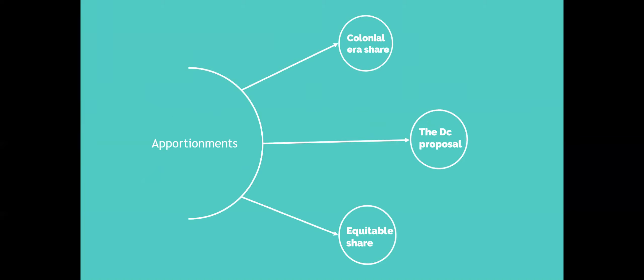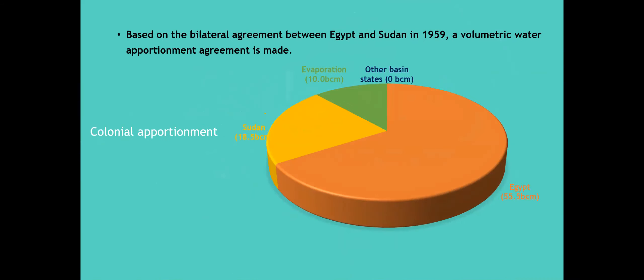The colonial apportionment is a bilateral agreement between Egypt and Sudan signed in 1959, assigning volumetric apportionment to the two downstream countries out of 84 billion cubic meters: Egypt is entitled to 55.5 billion cubic meters, Sudan obtained 18.5 billion cubic meters, 10 billion cubic meters is apportioned for evaporation, and nothing for upstream countries.